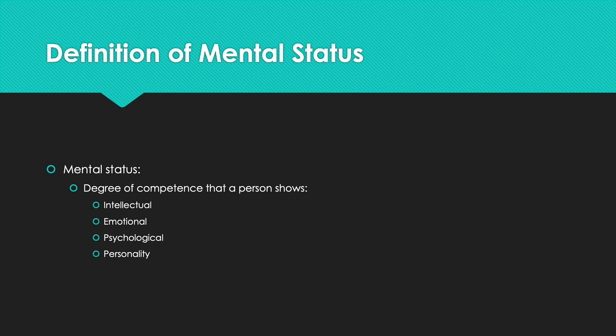Mental status is the degree of competence that a person shows from an intellectual, emotional, psychological, and personality level. It's understanding that the person is at baseline competence. Usually we say alert and oriented times four — alert and oriented to person, place, time, and situation. That would be checking to make sure a person is basically an interpretation of a healthy individual from a psychosomatic perspective — from the brain, everything is running and all the cylinders are firing.